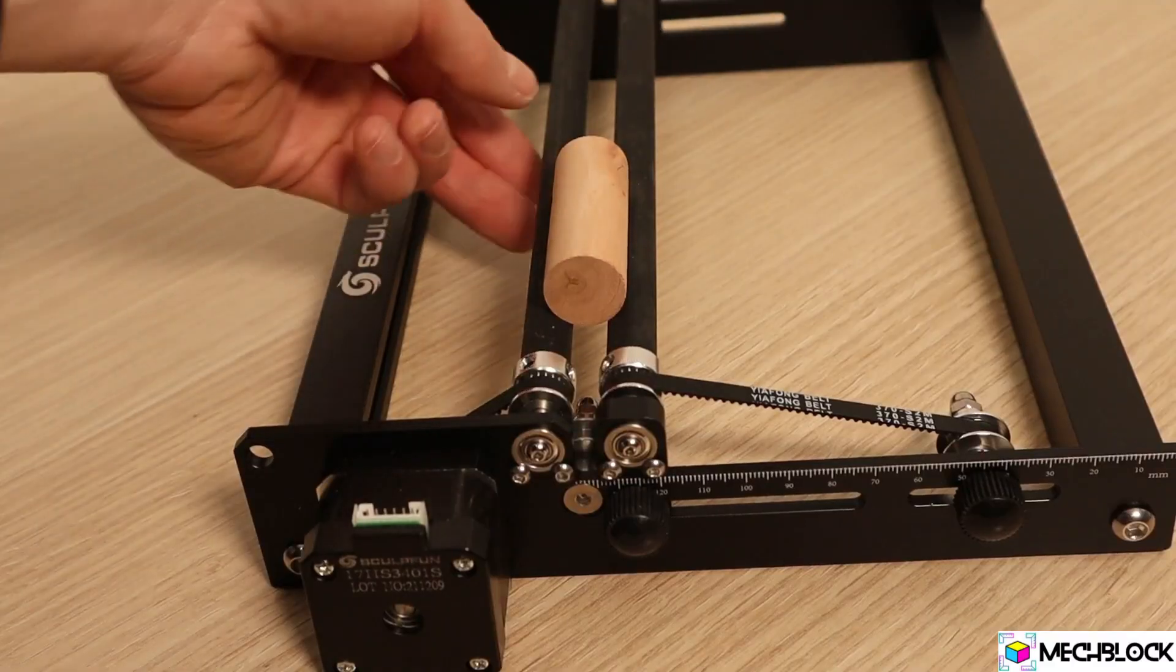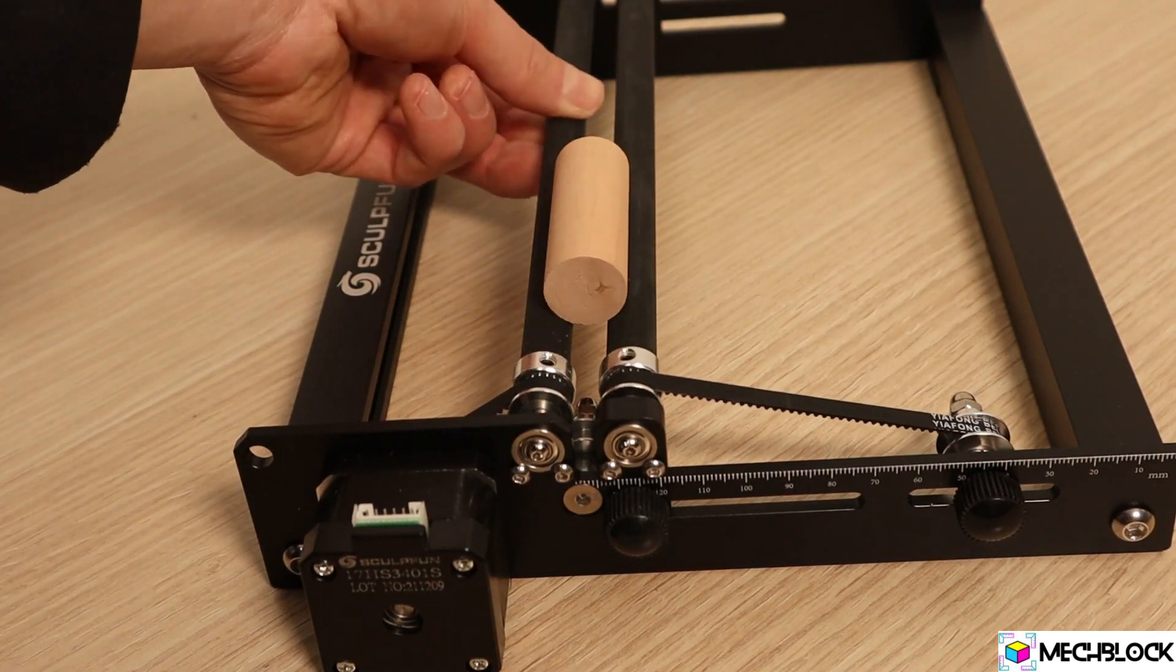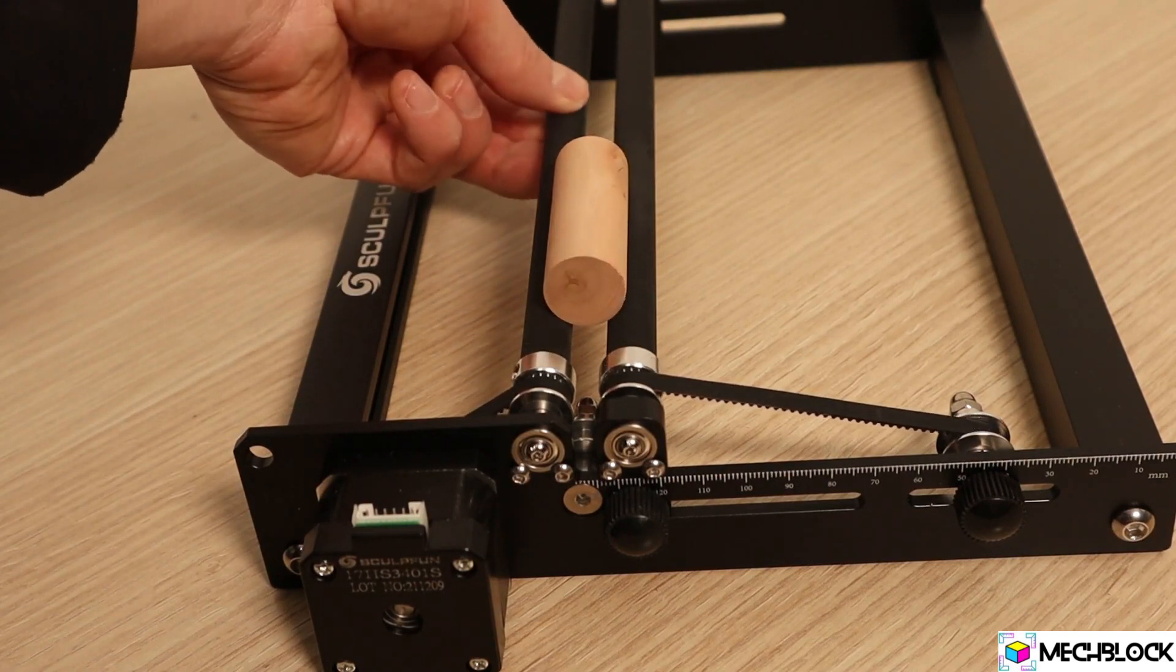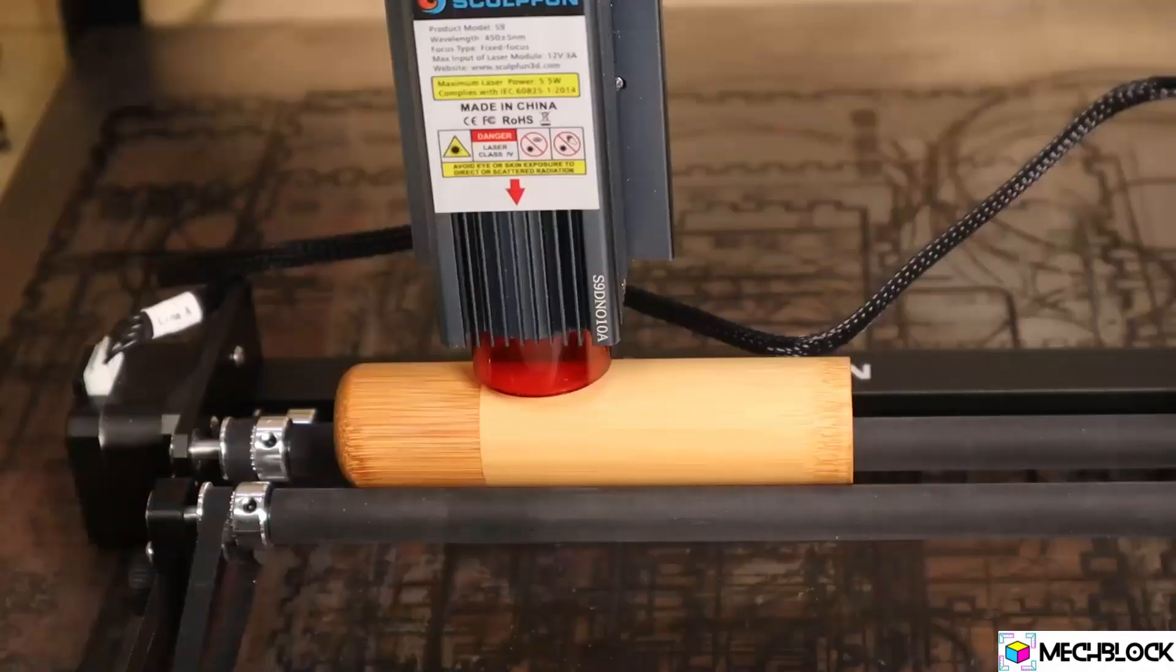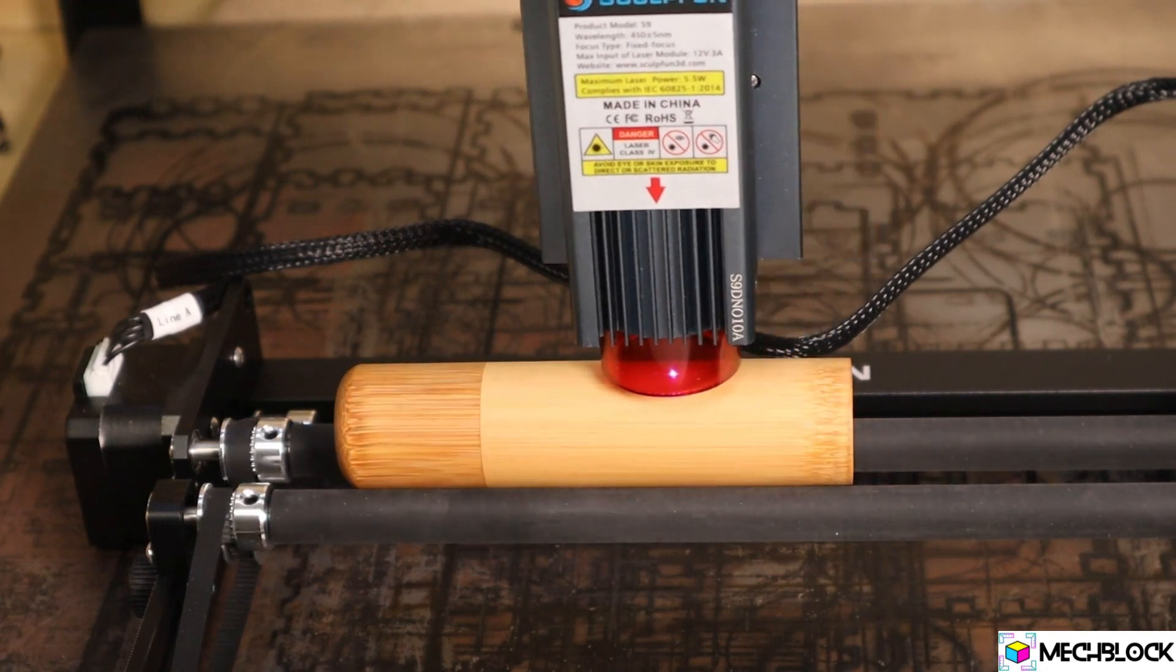It can be used with cylinders sized from 6 mm to 150 mm in diameter. Here is an engraving I made on my storage box for my secret spices.